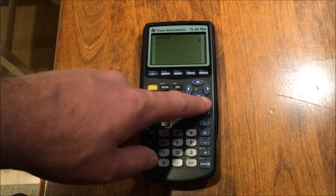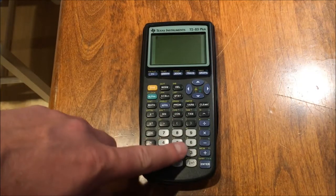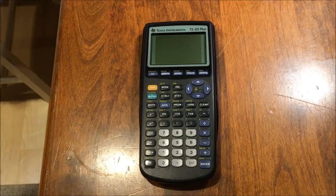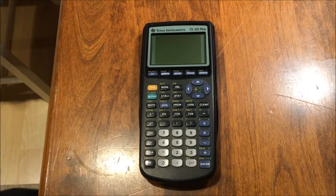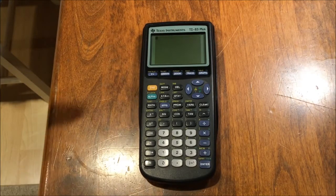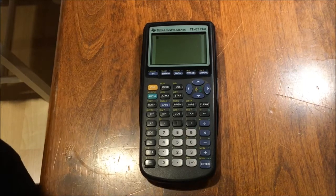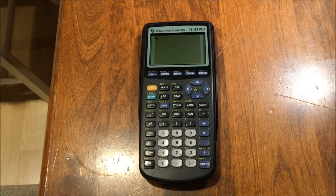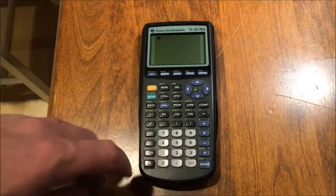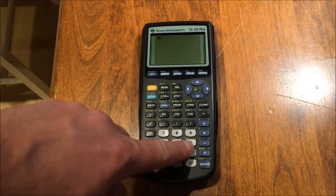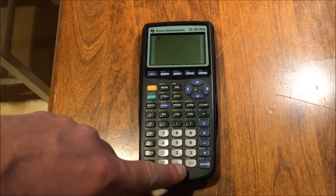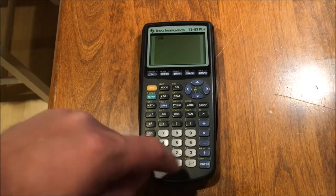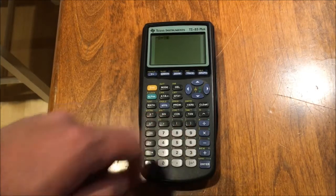Now, if let's say I wanted to make a number negative, a basic difference in the equation operating system style calculators is you could put the negative first. This little button here is different than the minus button here. This negates a number. So I have negative eight now. And I can multiply that by numbers as needed.